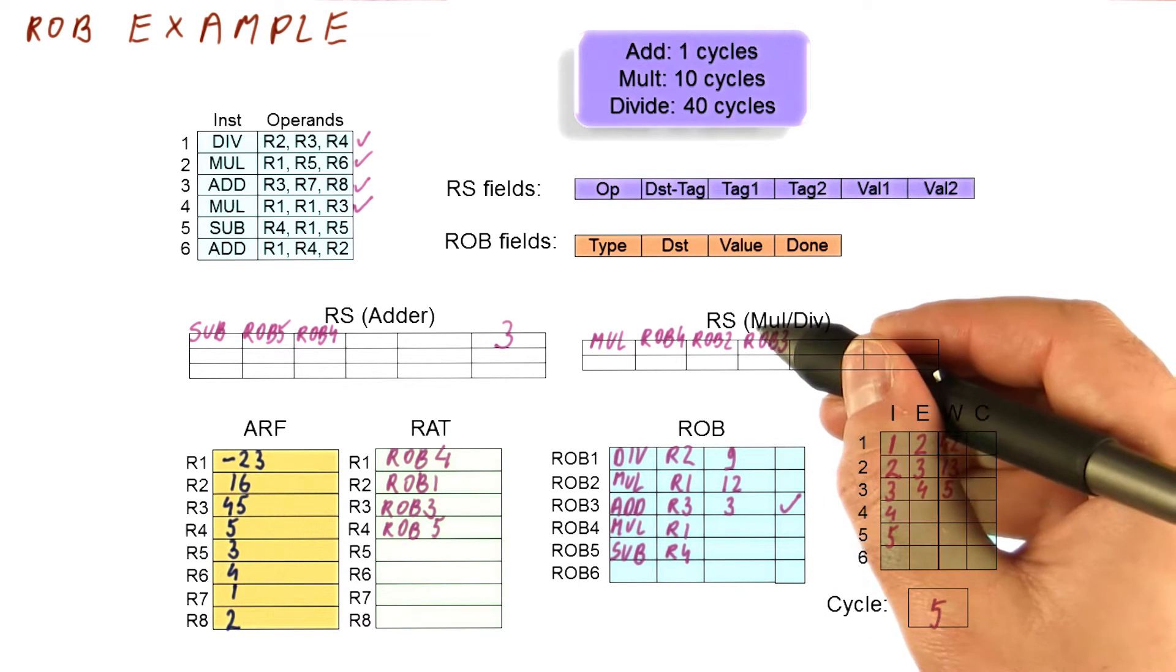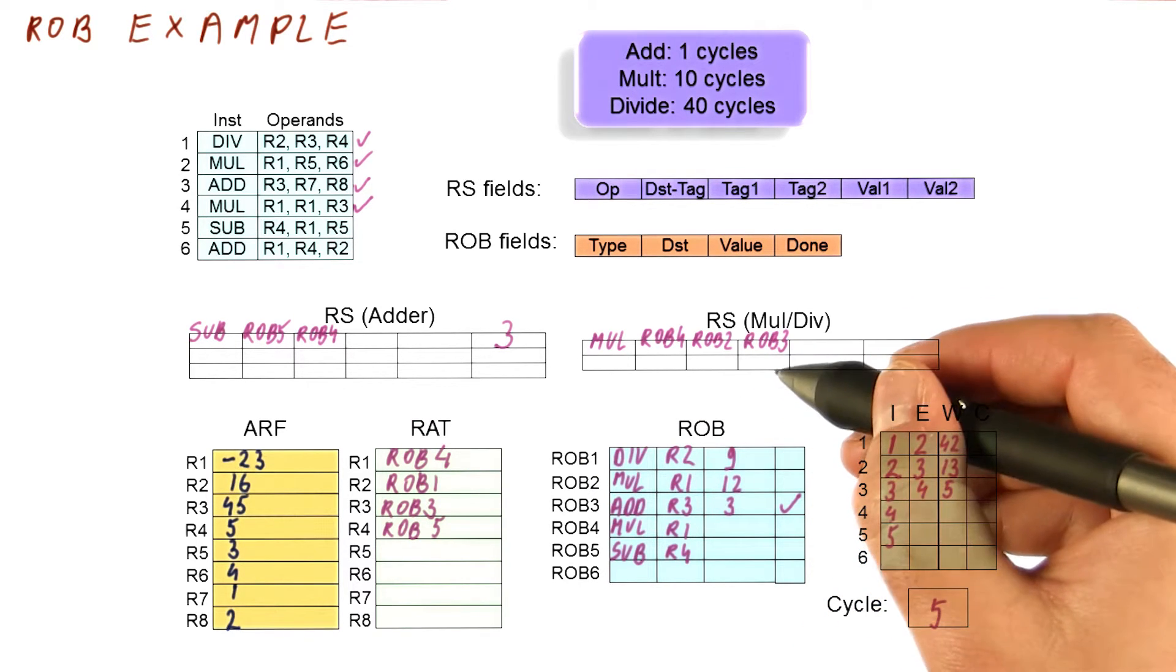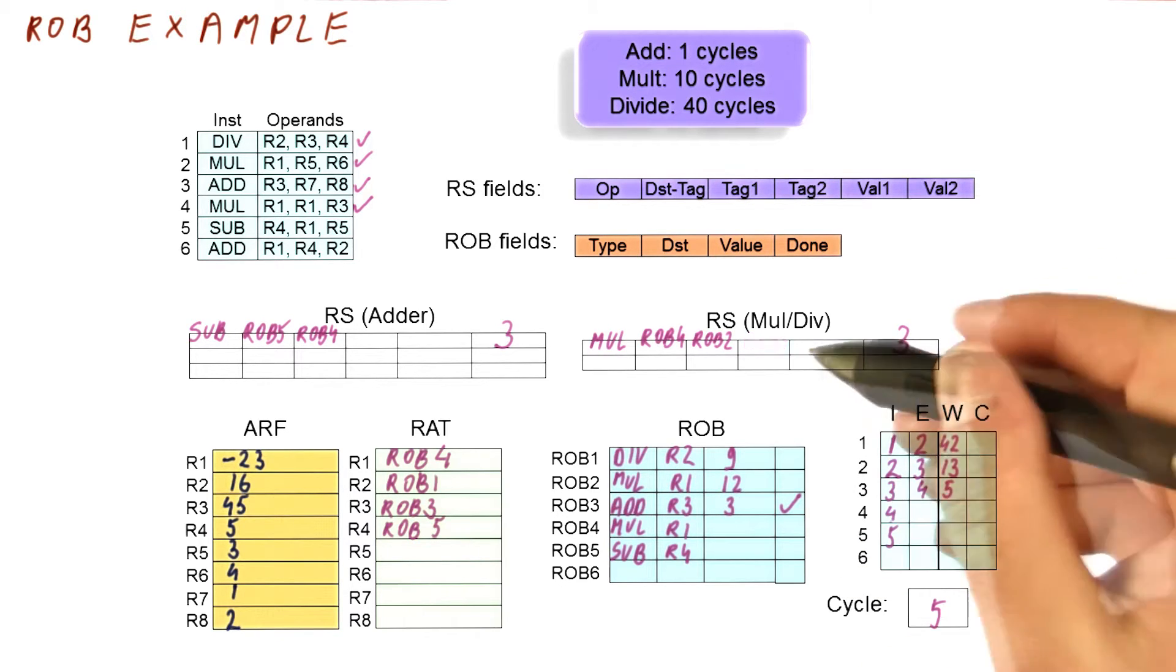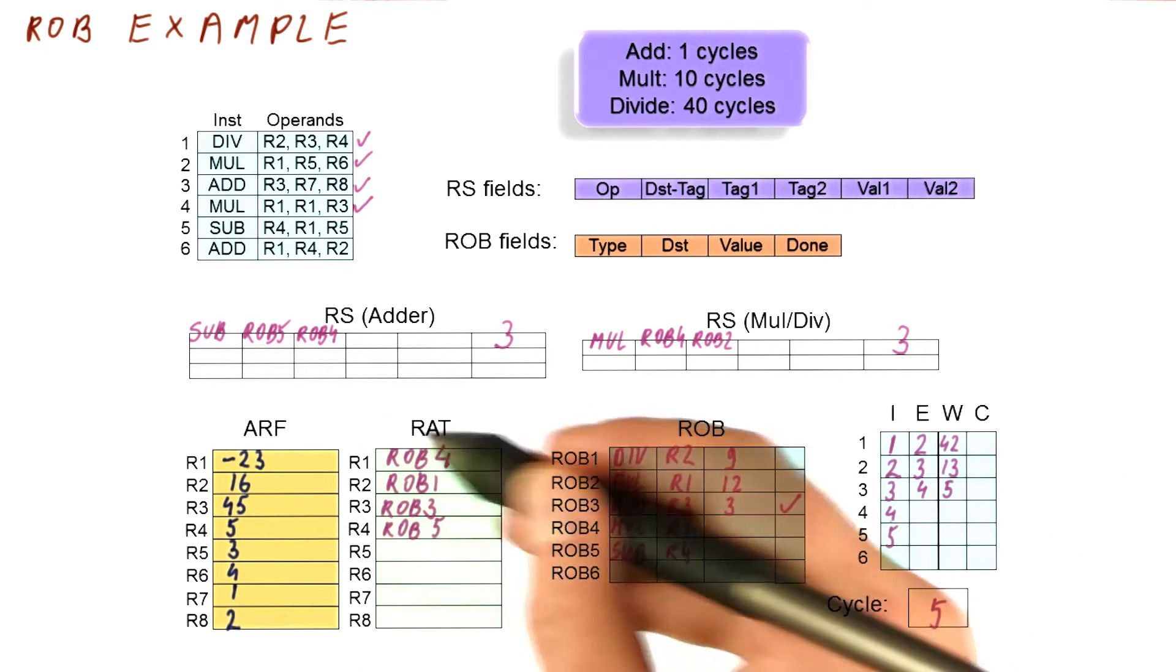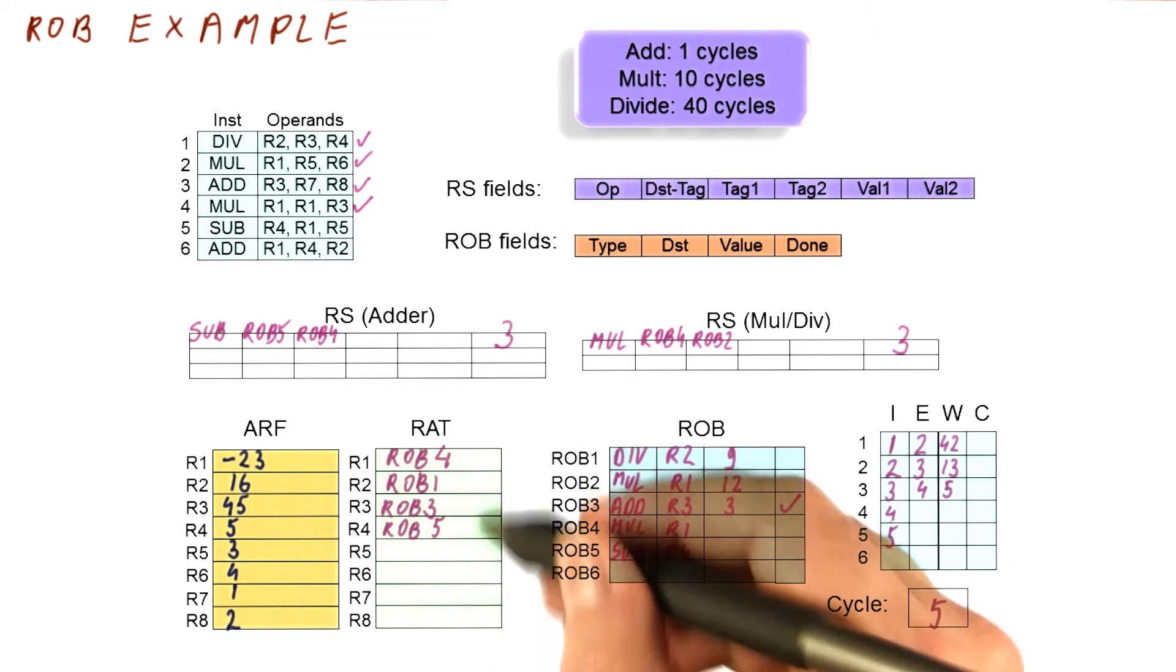So what's going to happen is there is a match here. This one is waiting for ROB3. It's going to capture a value of 3 and no longer waits for ROB3. So this is what happens in cycle five as far as broadcasting of this result is concerned. Note that the RAT and everything is not updated yet. That will happen at commit.